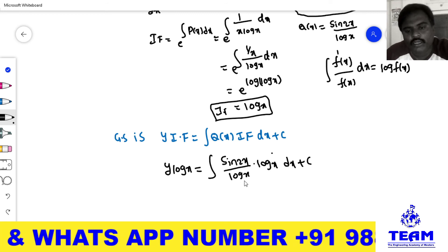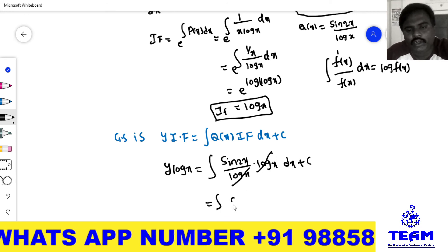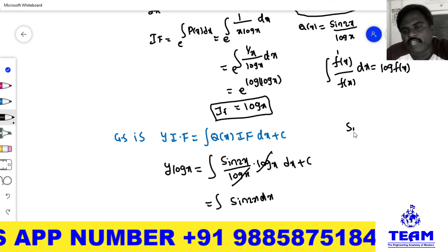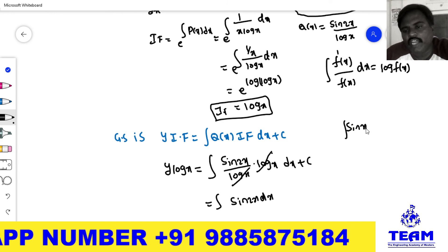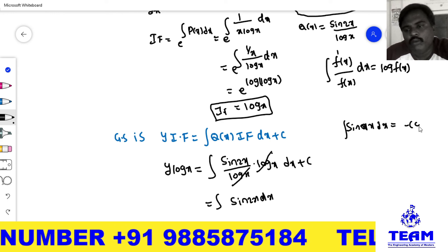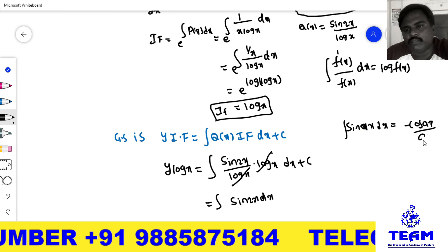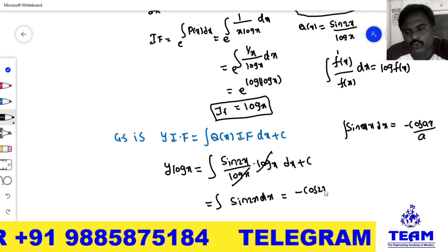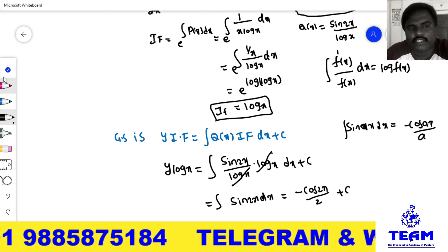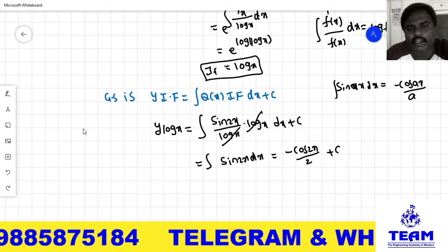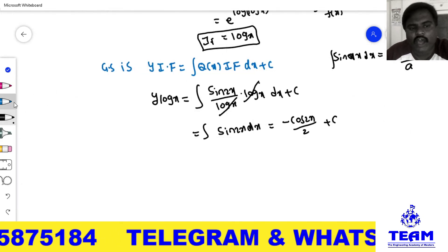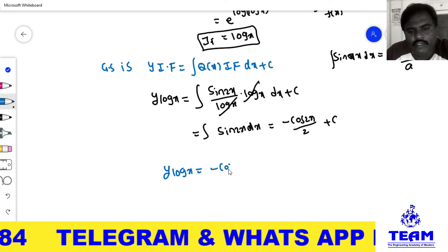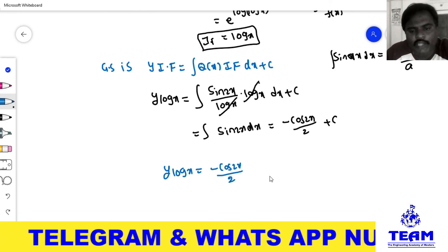The denominator log x and numerator log x cancel. So we have the integral of sin(2x) dx. The integration of sin(ax) is −cos(ax)/a. So this gives −cos(2x)/2. Hence, the general solution of the given linear differential equation is: y · log x = −cos(2x)/2 + C.